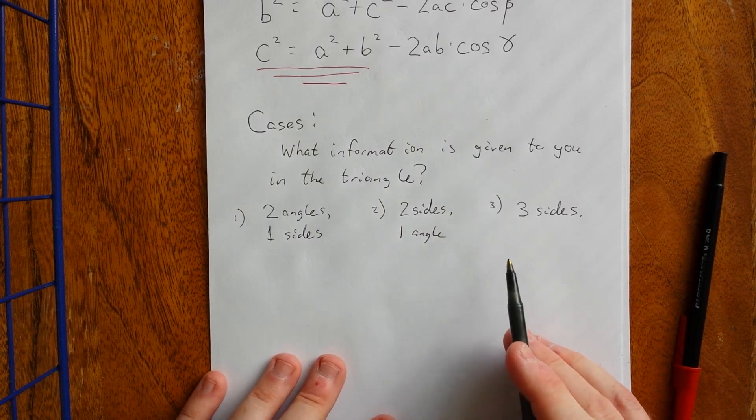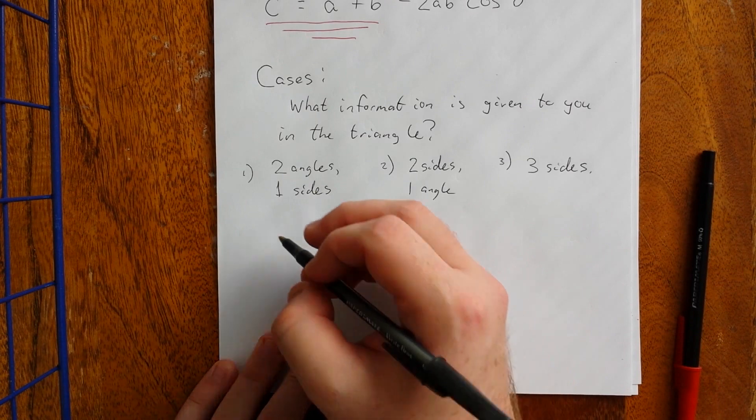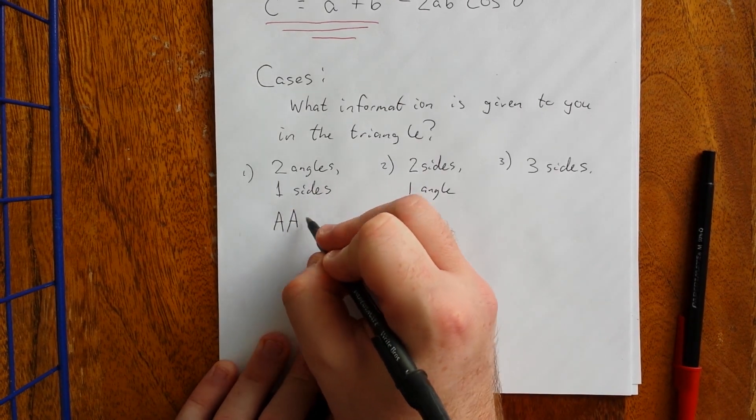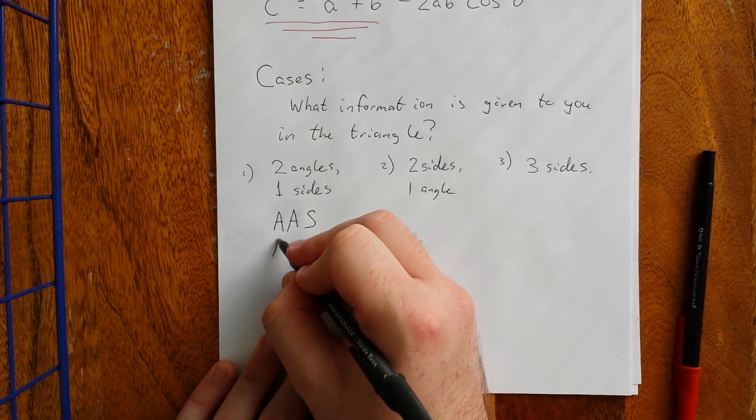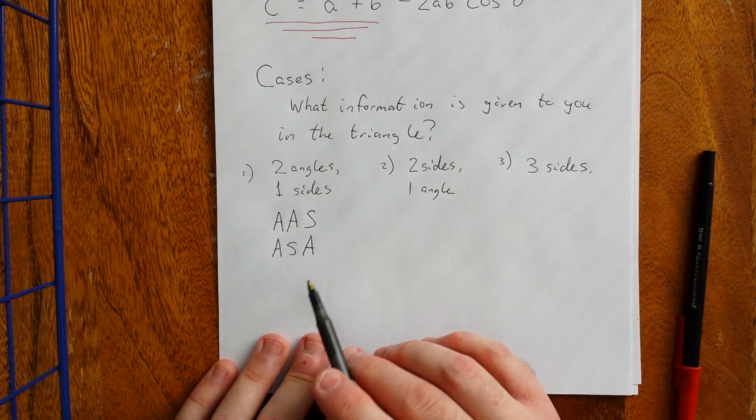Even those get cut down into subcategories though, depending on the order of the information that I give you. If I give you two angles and one side, we can break these down into two categories, referred to as angle-angle-side and angle-side-angle.